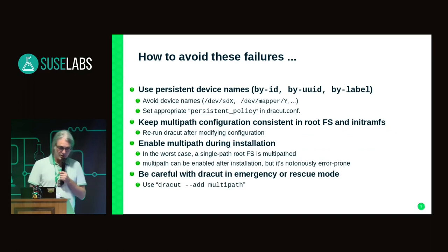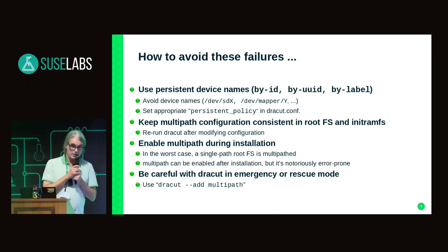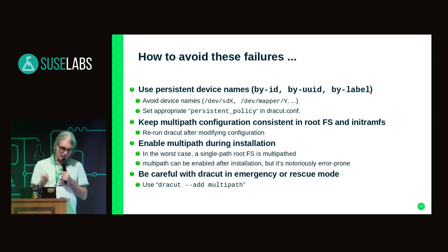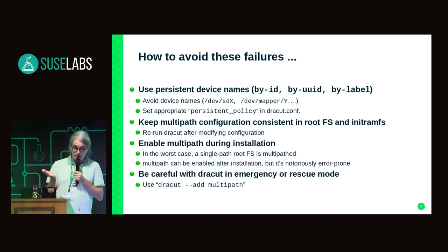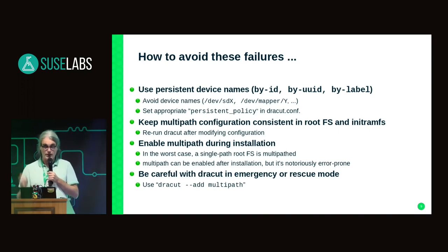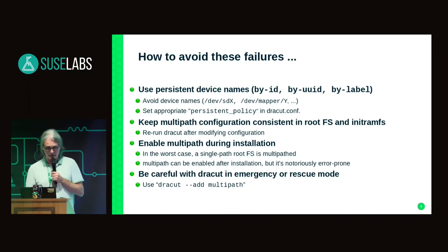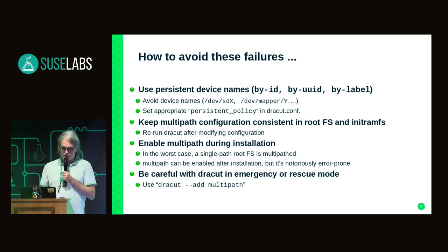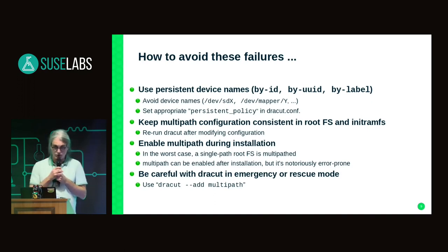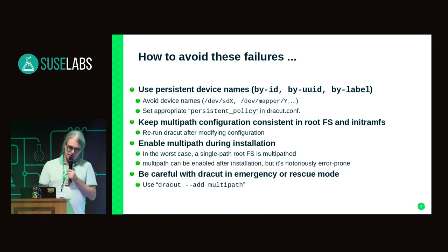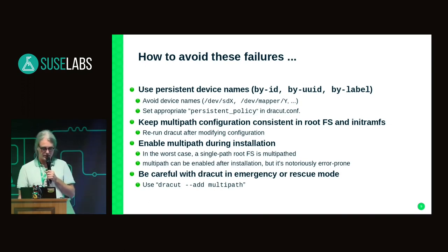So how can these failures be avoided? Well, by using persistent device names — we all know that. But there is a catch here. Dracut has had a preference for device mapper names for a long time, so when there is a device mapper device it will usually ignore the persistent by-UUID or whatever name, and use the device mapper device instead — hardcoded into the initial RAM disk. In order to avoid that, you have to set the 'persistent_policy' configuration option for Dracut. That's a good thing to do in general, and might be considered to make that a default in SUSE distributions in the future. Very important is to keep the multipath configuration consistent between root file system and initial RAM disk, so run Dracut whenever the configuration changes.